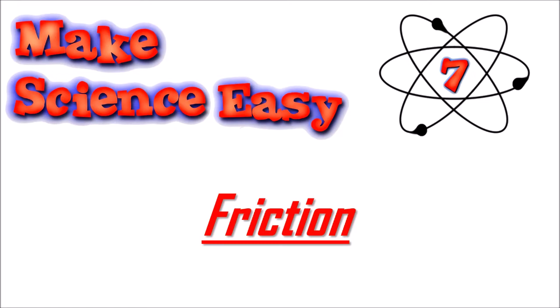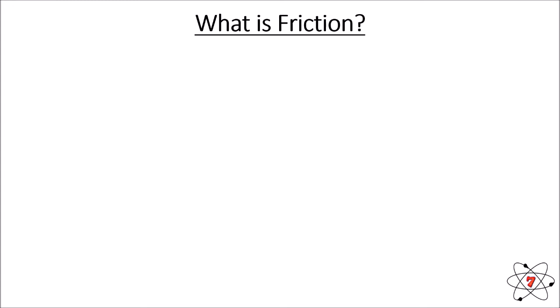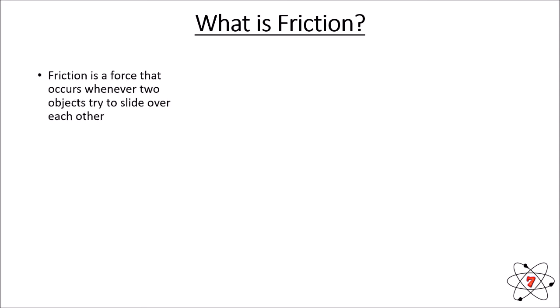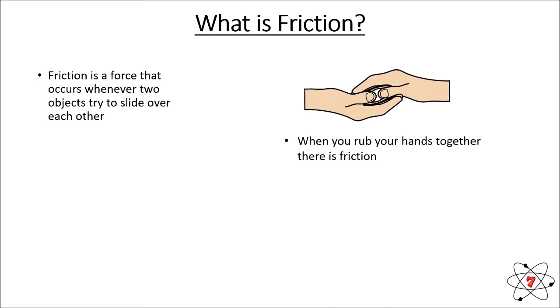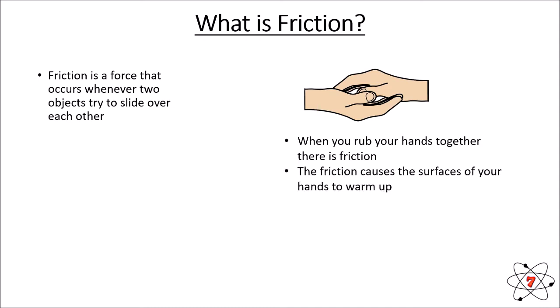Friction is basically a contact force, which means two objects are touching each other. It occurs any time the objects are touching and try to move or slide past each other. If you take your hands and rub them together, you will feel friction between your hands as they work against each other — this is the force of friction.